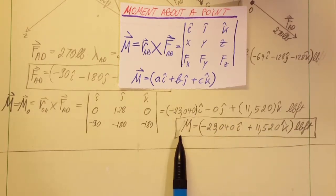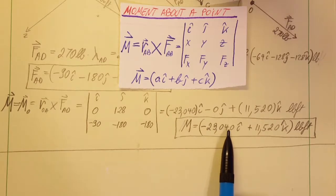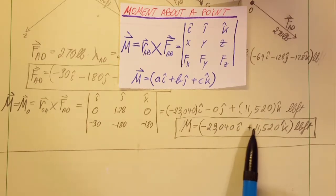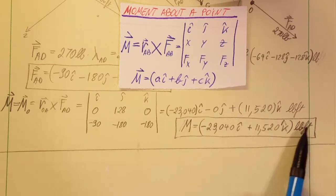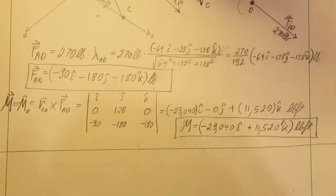And then we can get our moment. And we have negative 23,040i plus 11,520k pound-feet.